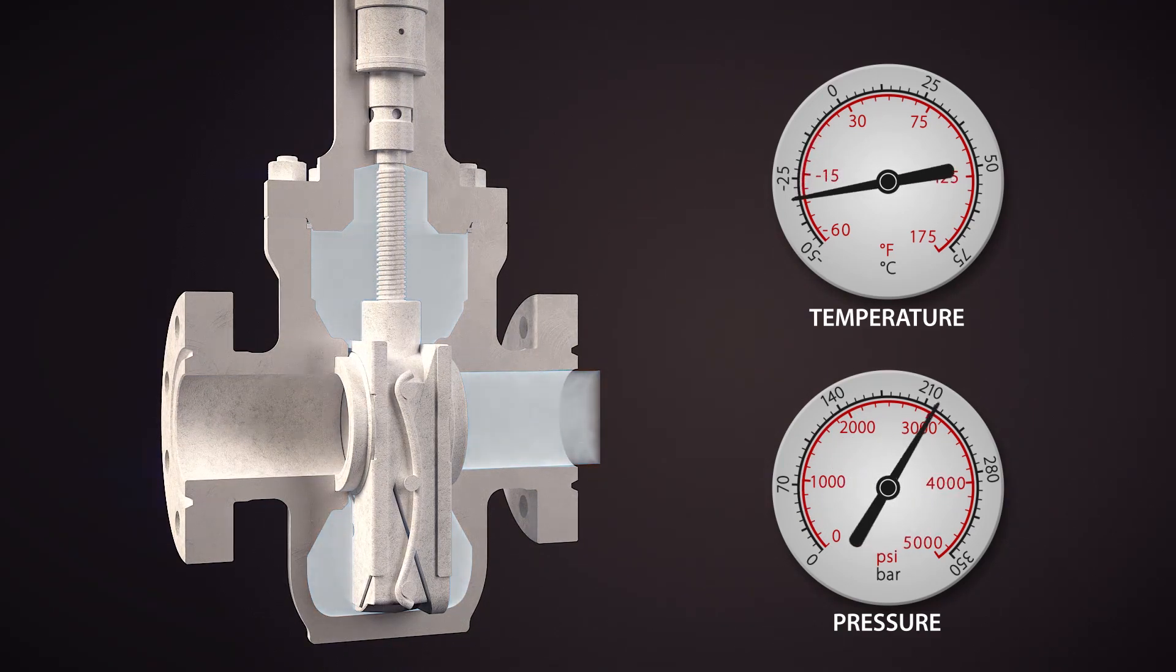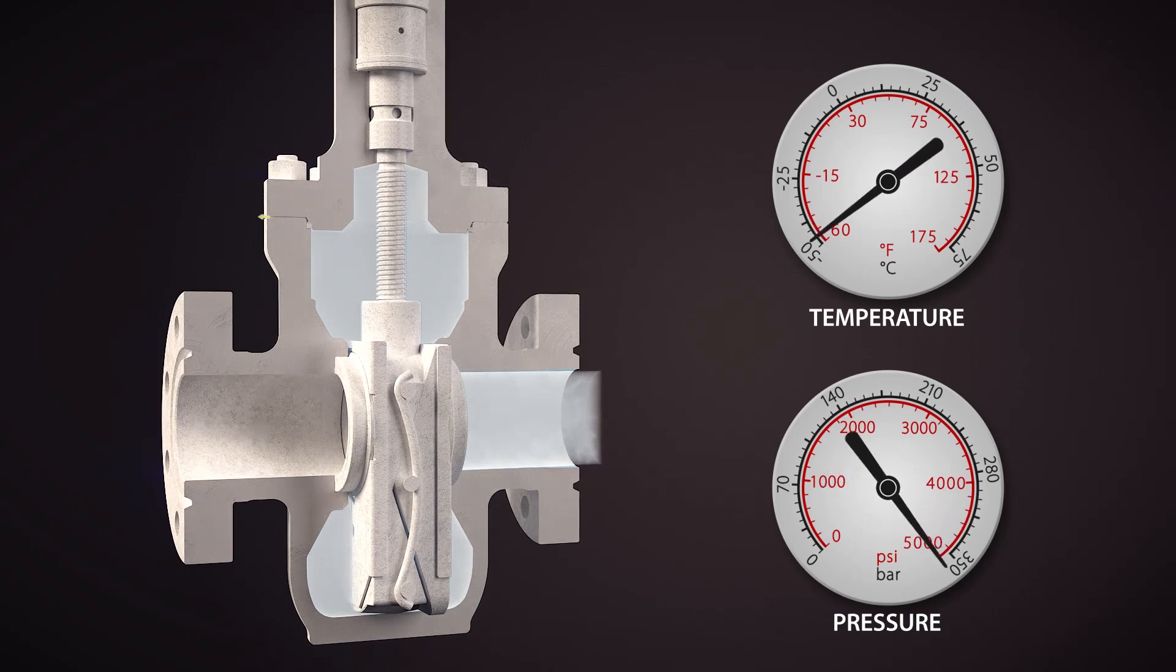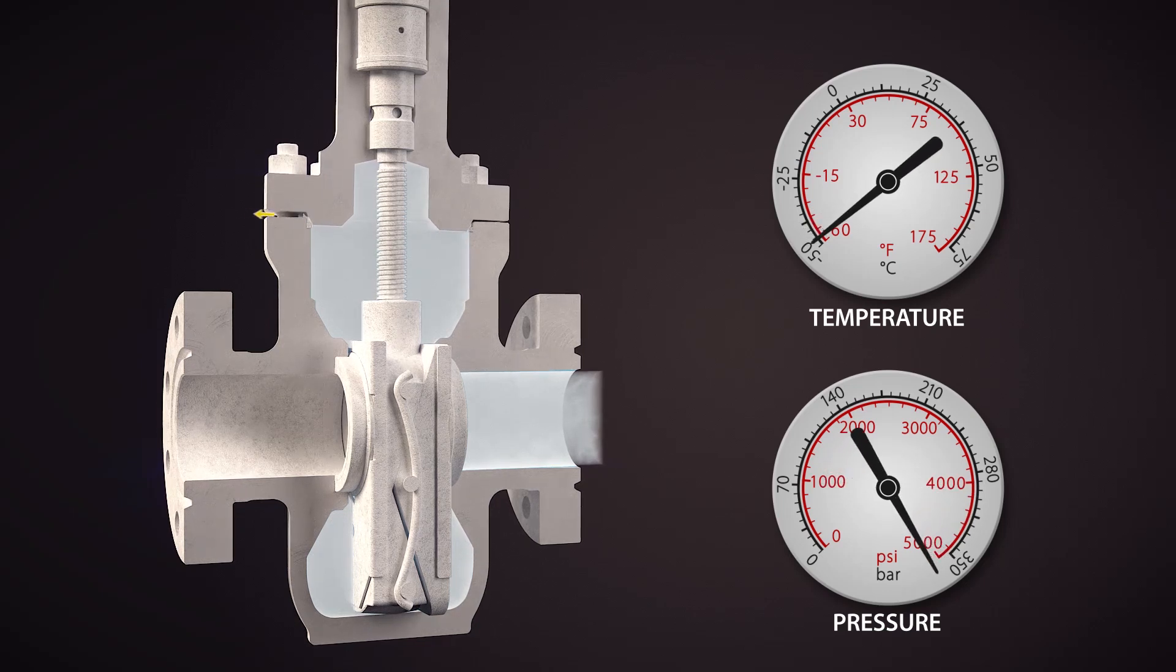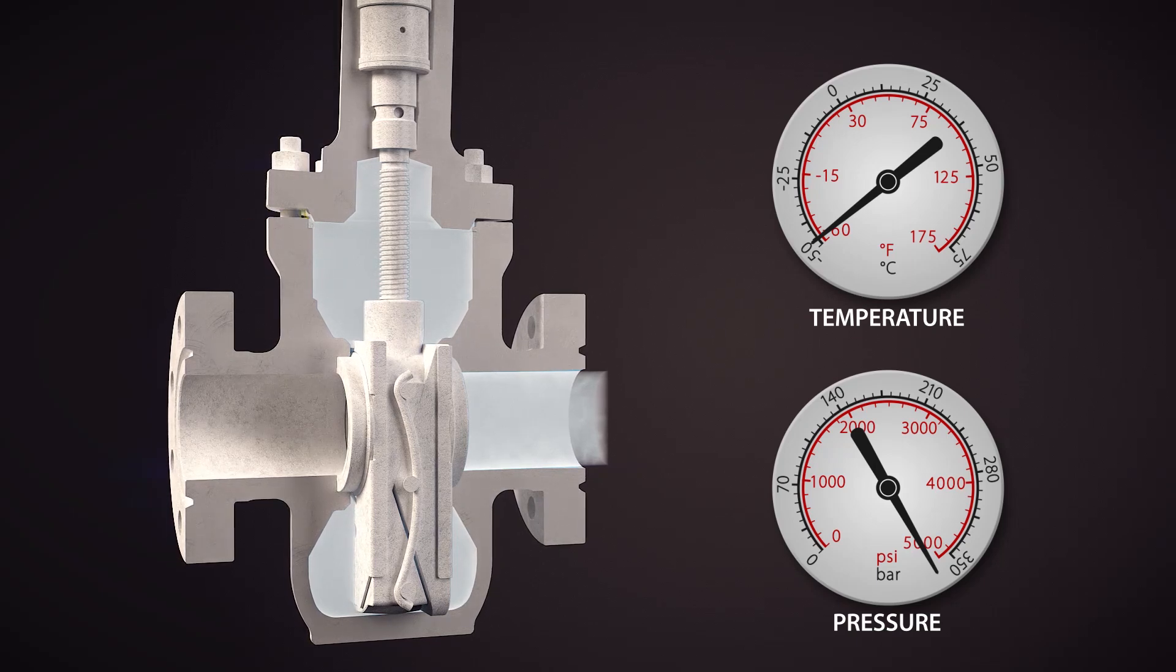If the pressure exceeds the strength of the bolts that secure the valve's bonnet to its body, the bolts can yield, and the seal between the bonnet and the body is lost, which can lead to an uncontrolled release.